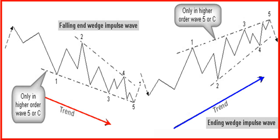The price is moving between two converging lines — a wedge pattern. Waves 1, 3, and 5 are 3-wave zig-zag patterns. Wave 2 is a correction pattern. Wave 3 is always bigger than wave 2 and is never the smallest wave. Wave 4 can be any correction pattern. Waves 4 and 2 may be partly overlapping.